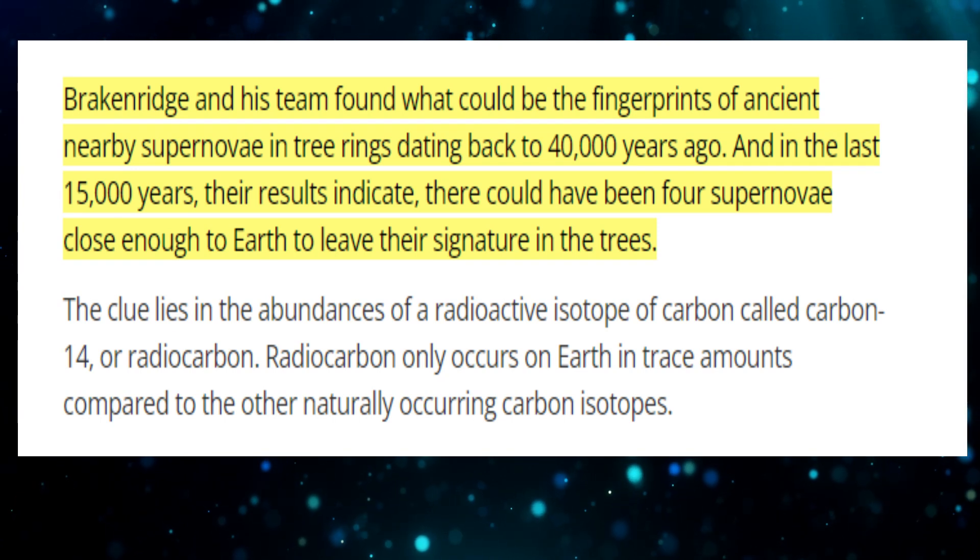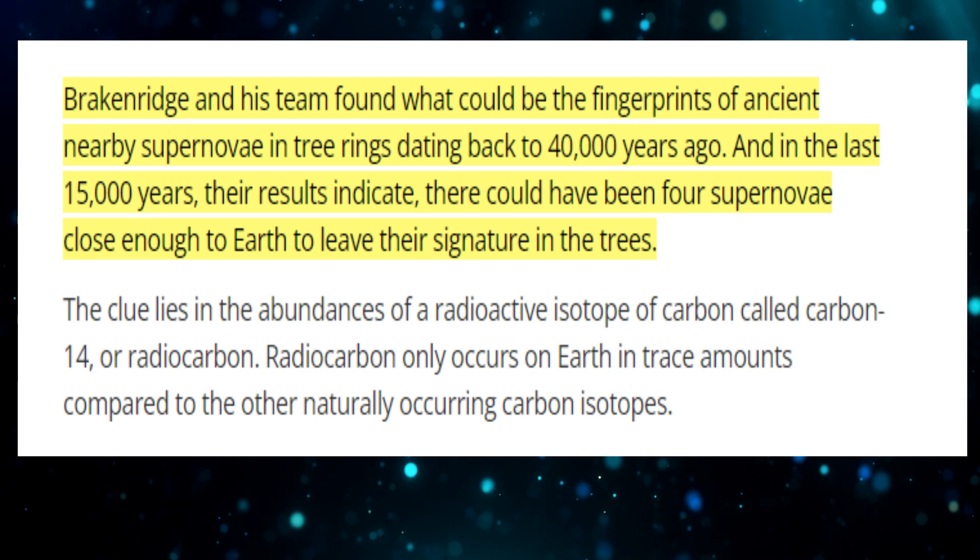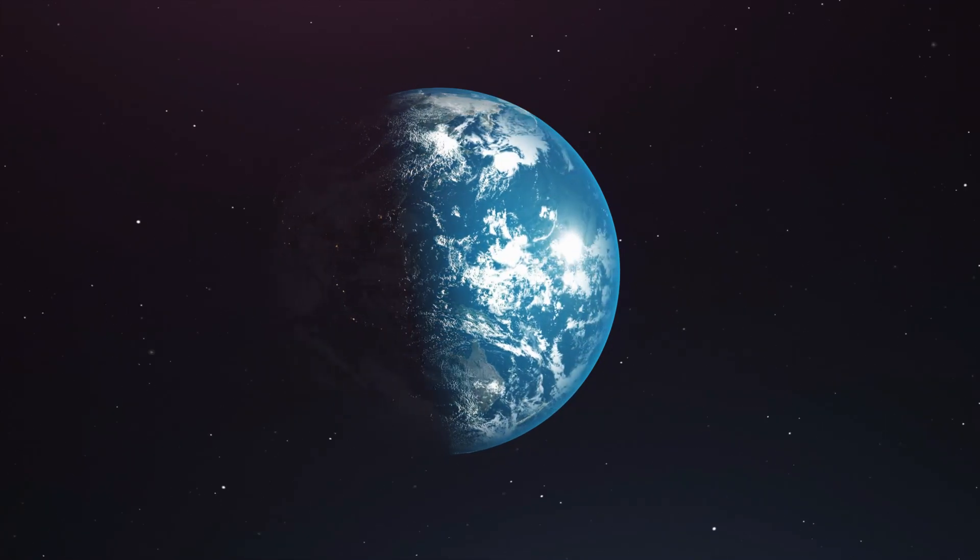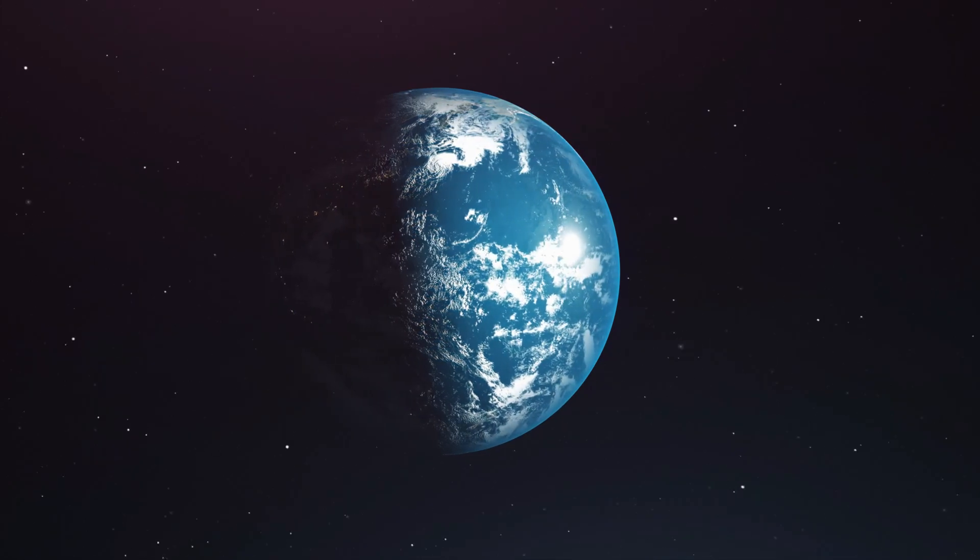He and his colleagues found what could be the fingerprint of nearby ancient supernova tree rings dating back 15,000 years. This is when four supernovae have been close enough to Earth to leave their signature compared to the other forms of naturally occurring carbon. The amount of radiocarbon found on Earth is negligible.